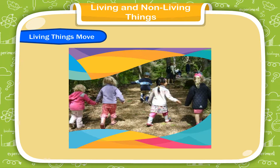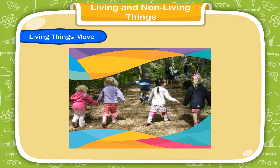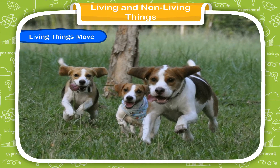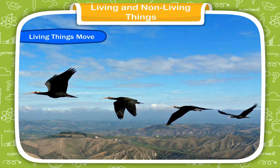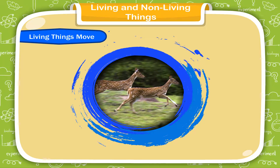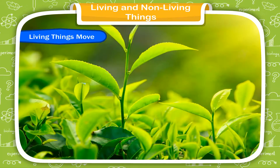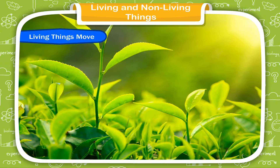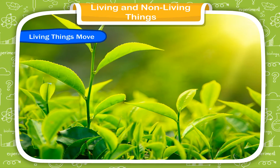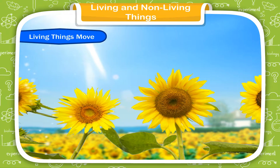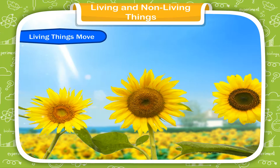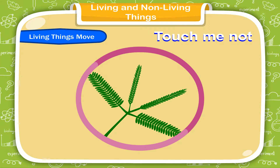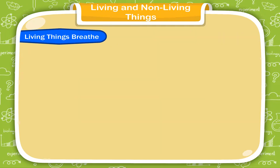Living things move. Most living things move. We walk to different places. A dog walks or runs here and there. A bird flies in the air and a deer runs very fast in the forest. Plants do not move like us or animals, but you can observe that they can move some parts. Have you seen a sunflower? It turns its face towards the sun.